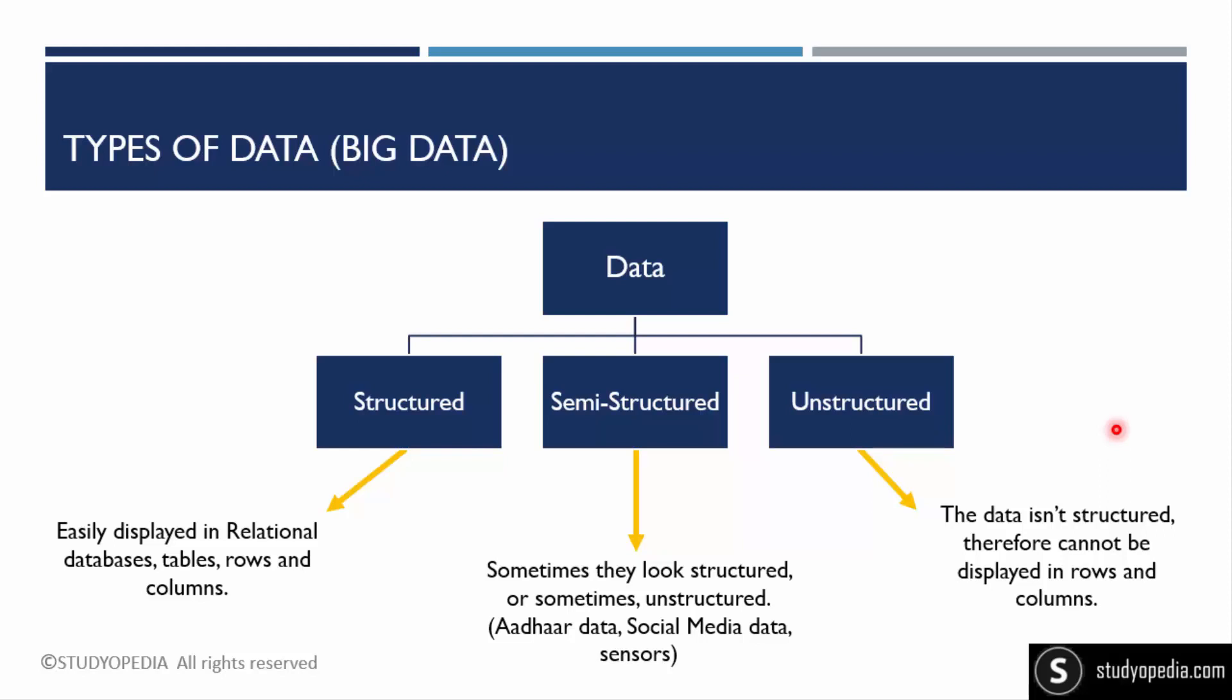In this way, unstructured data is managed. Now came semi-structured data. To understand this, we can go through Indian Aadhaar data. Aadhaar data is semi-structured because it stores data in structured as well as unstructured form. Structured: the name, age, date of birth all get saved under row and column form. But what about fingerprints and images? They get saved as unstructured data, in the form of MongoDB. Semi-structured data can include both.